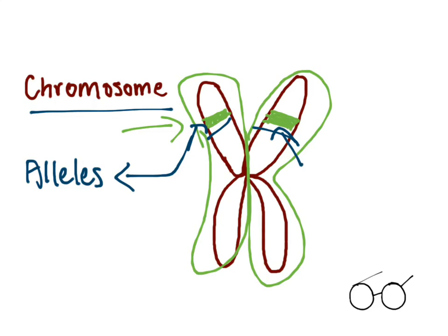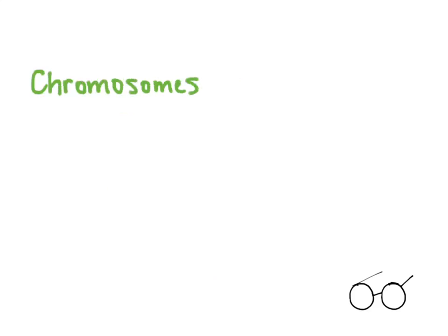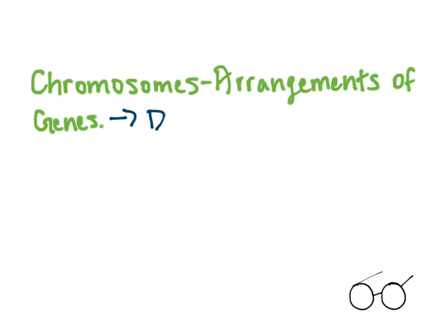Now we can actually lead into the definition of chromosomes, which is quite simple. We already kind of said it, and that is arrangements of genes, which in turn are pretty much arrangements of also DNA, because genes are structures of DNA.